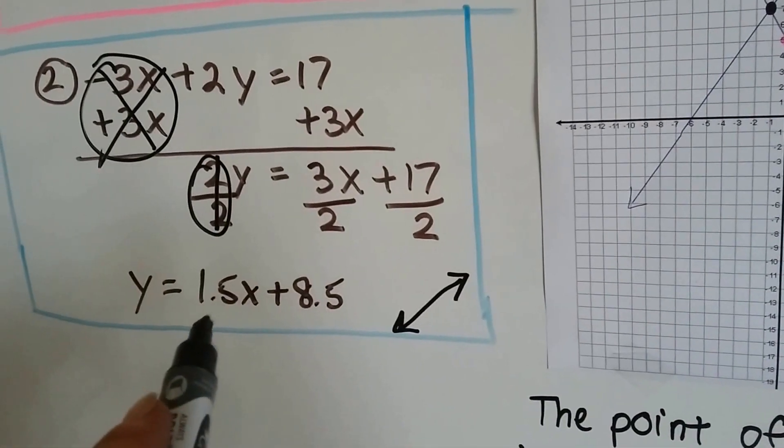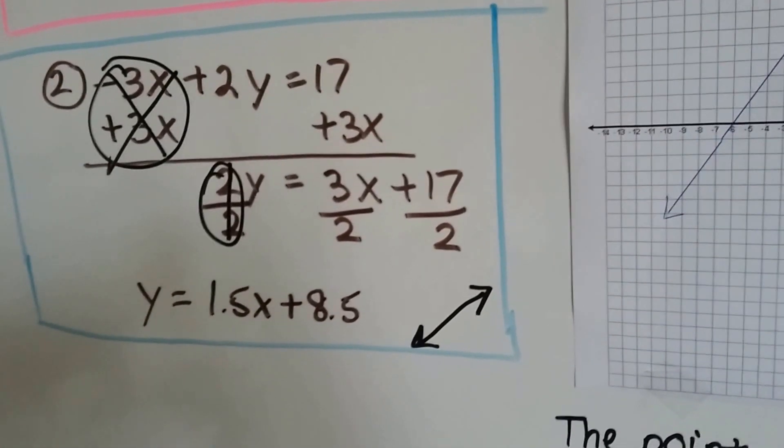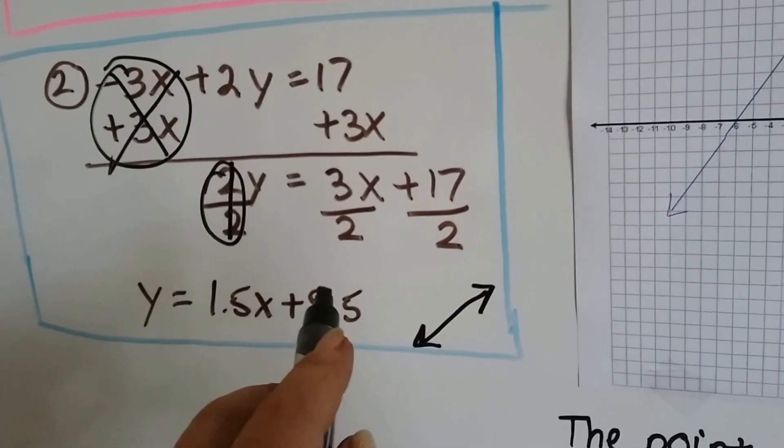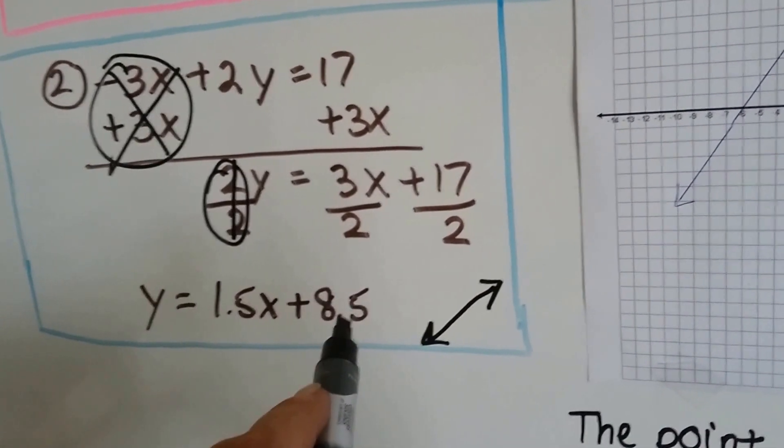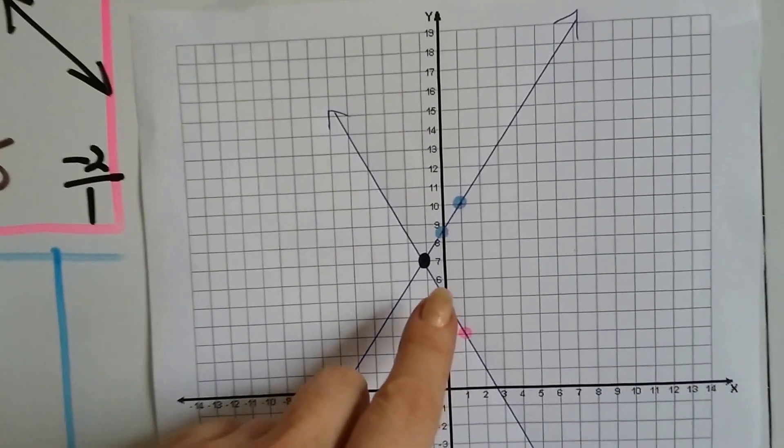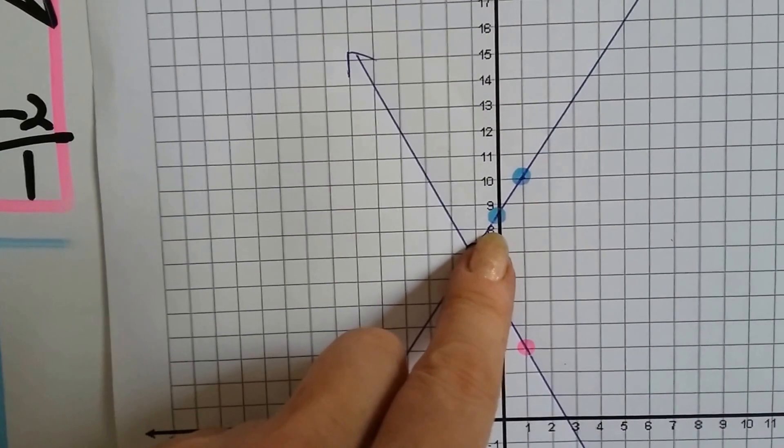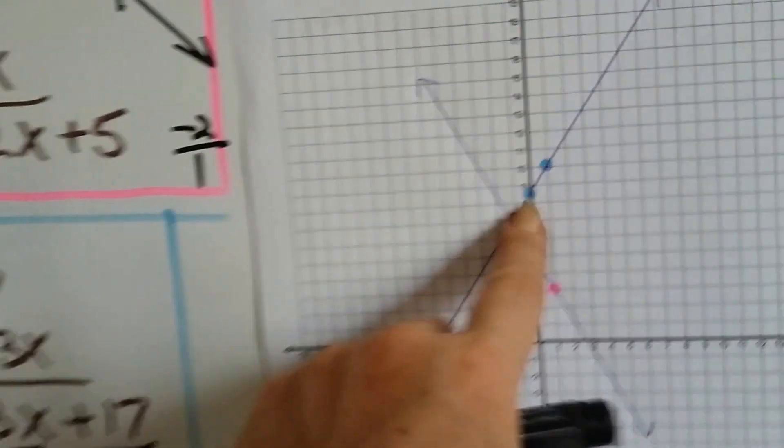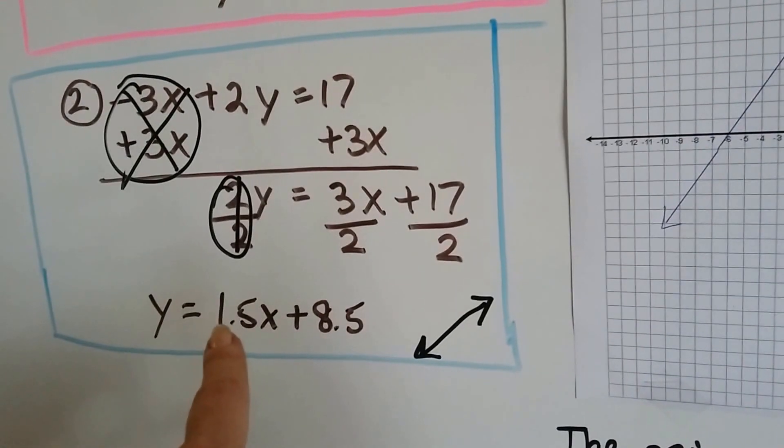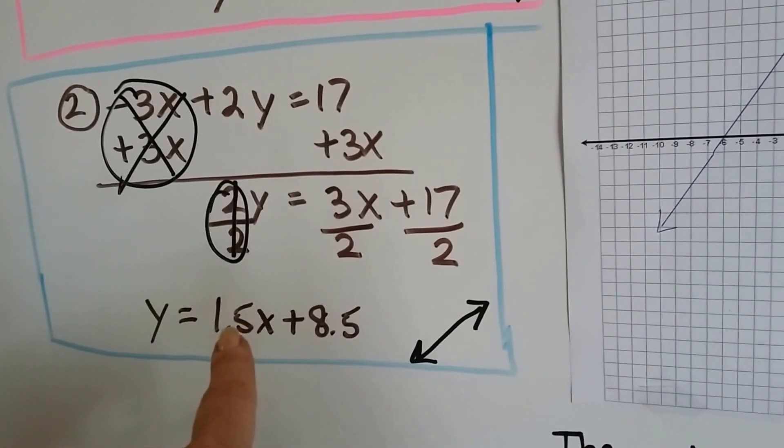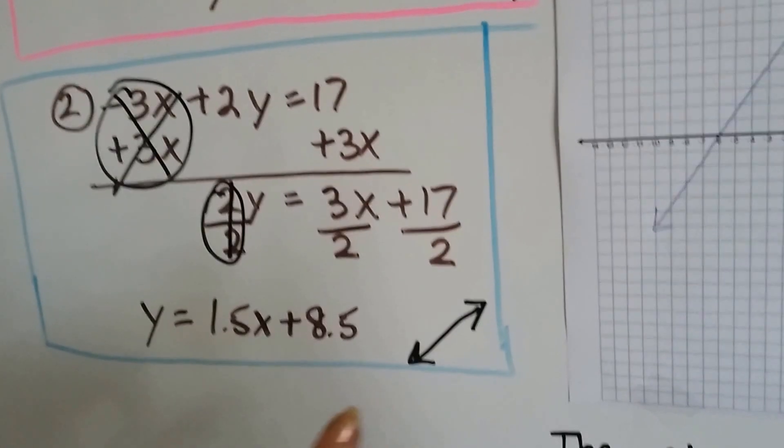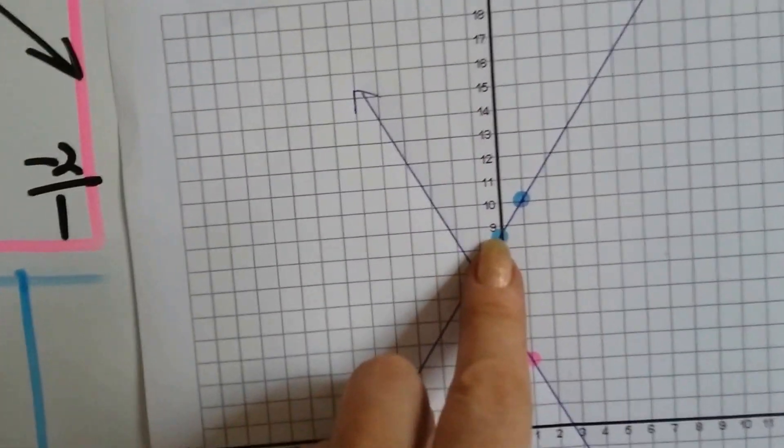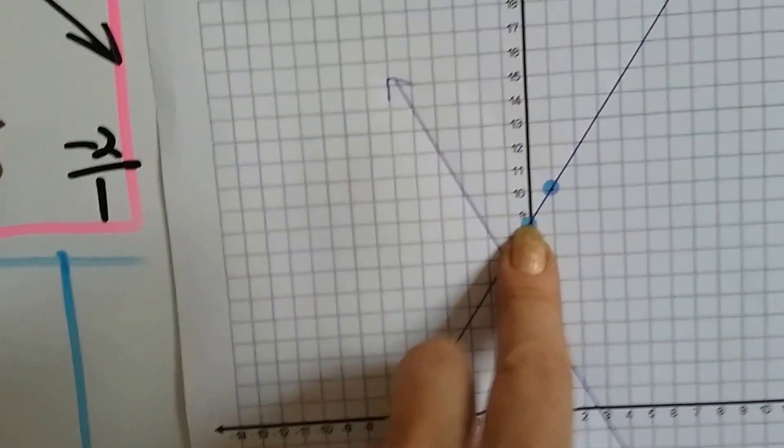So now we've got to plot where this equation is. So I know it hits the y-axis at 8.5. So here's 8.5, it's right in between the 8 and the 9. Here's 8.5. I also know my rise is a 1.5, that's going to be one and a half boxes, and it's positive so it's going to go up this way.